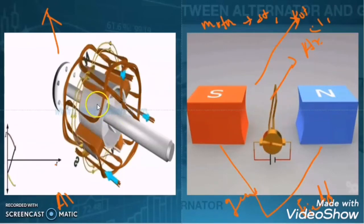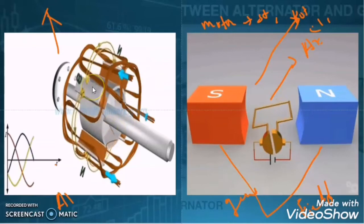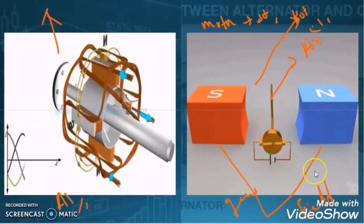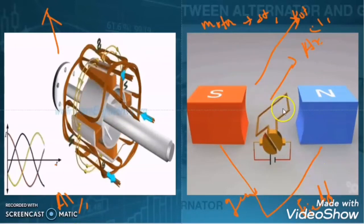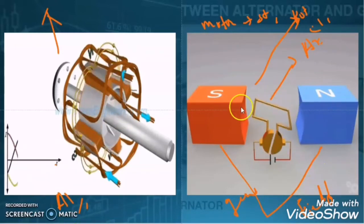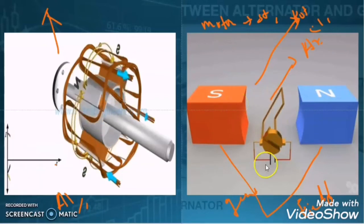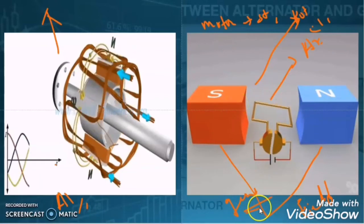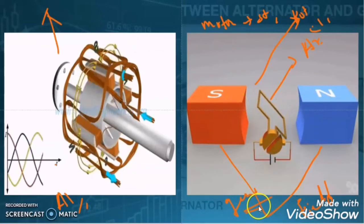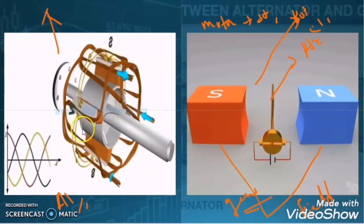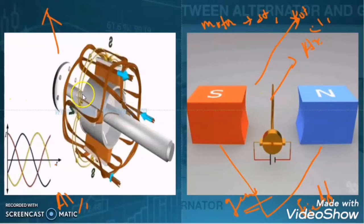When the field winding is rotating with respect to the armature, it is called an alternator. And when the armature is rotating with respect to the field winding, that is called a generator. Now let us try to find the other differences between the alternator and generator.